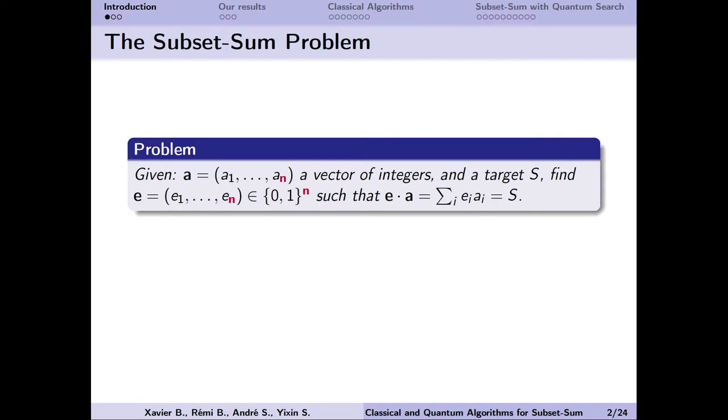The subset sum problem is the following. Given n integers a1, a2, until an, and the target s, we want to find a subset of the integers that sums to the given target. The subset that we are looking for can be represented by an n-bit vector e of coefficients in 0, 1, where each ei represents whether the corresponding ai belongs to the subset or not.